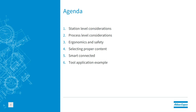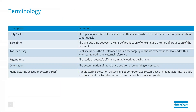This is the agenda: we're going to review the station level considerations, then the process. Once we go through those two, we're going to look at ergonomics and safety and then selecting the proper content — depending on what type of station or process, there might be content specific to one or the other. Then Smart Connected covers the IT aspect, such as MES systems, and we finish with a Walk the Line example.